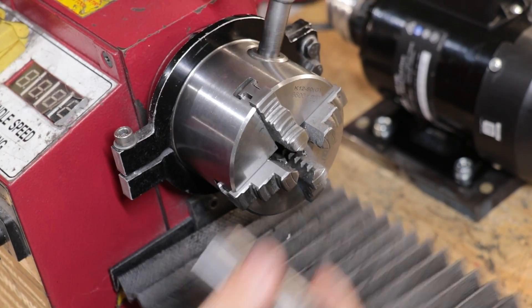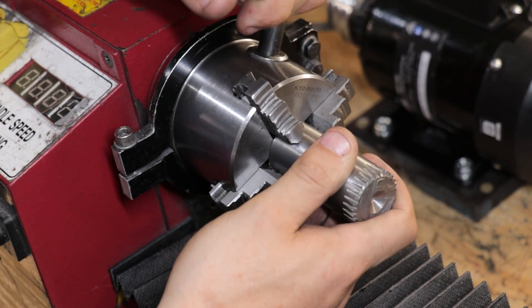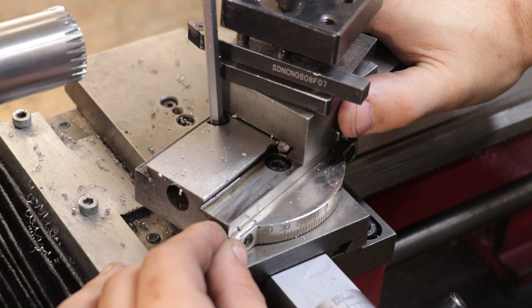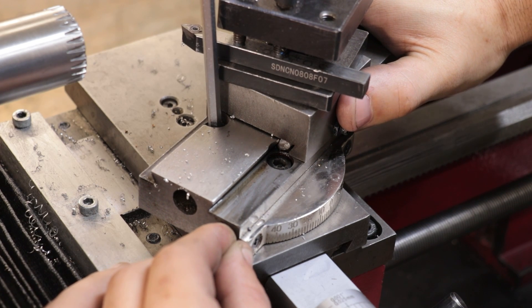I can now start to machine the main body of the screwdriver. The front part has a two to one taper so I'll set the compound to cut that.